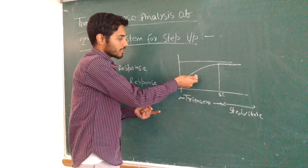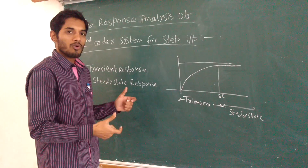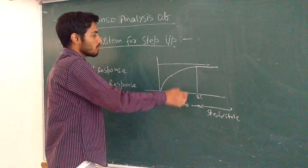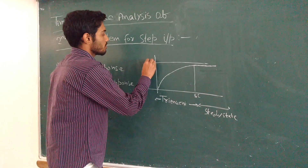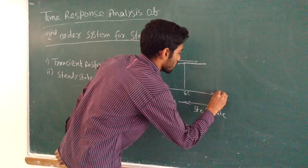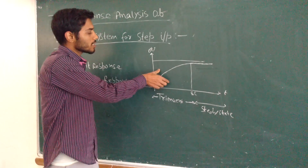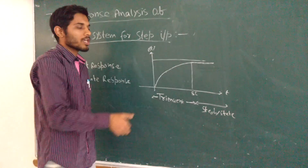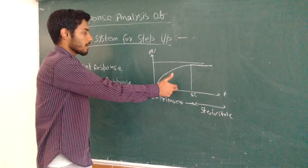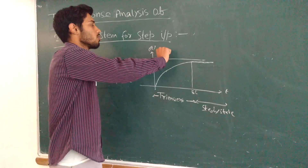From the transient response analysis, we can find out whether the system has oscillations or not, about its final value. We can also find out the rise time, settling time, and peak time. If the system has oscillations, then what is the maximum overshoot.